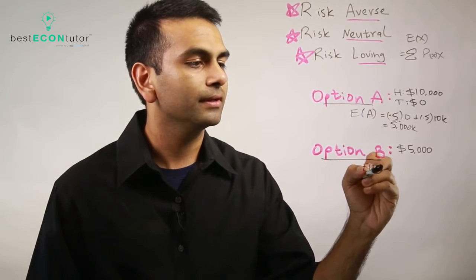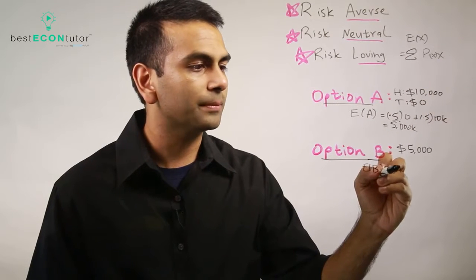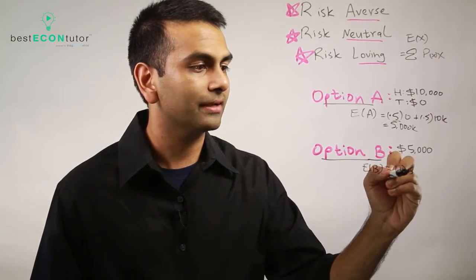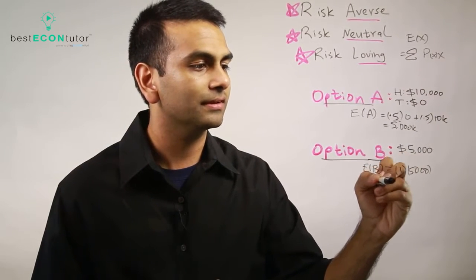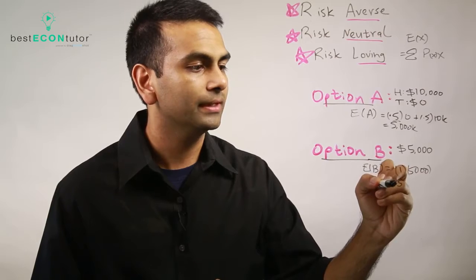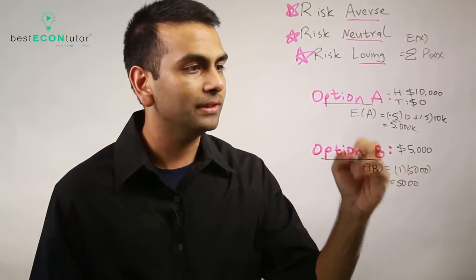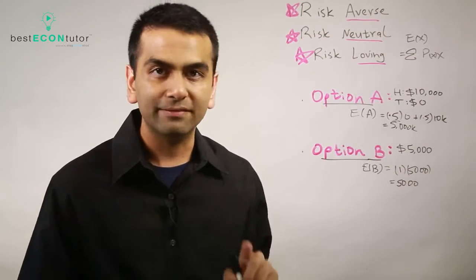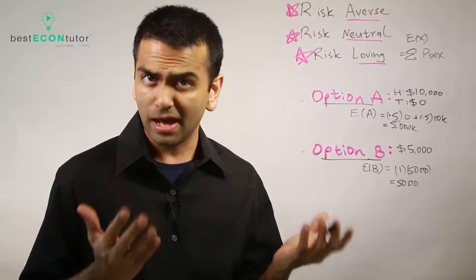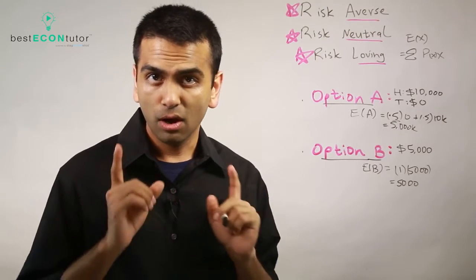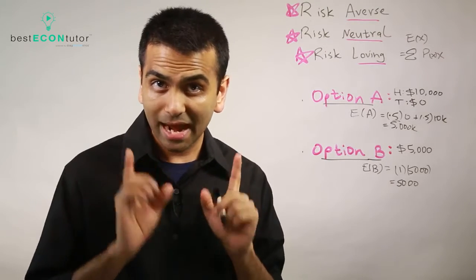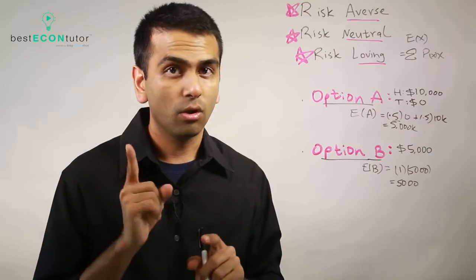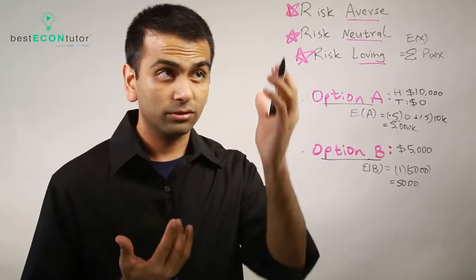For Option B, there's a hundred percent probability you get five thousand dollars and that's it. So the expected value is five thousand. Both options have the exact same expected value.